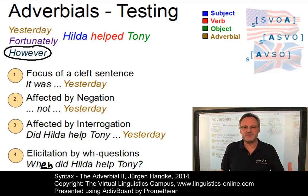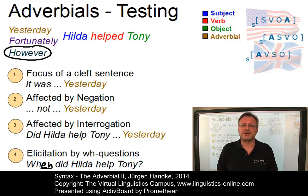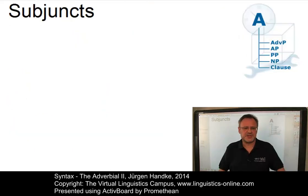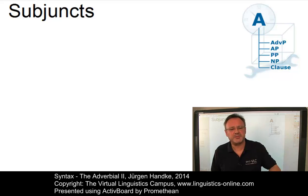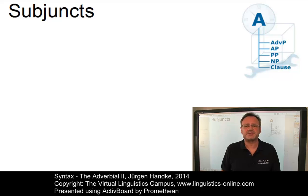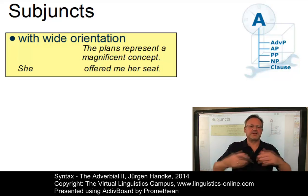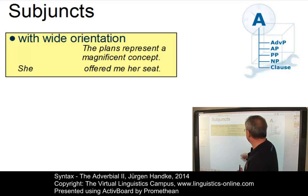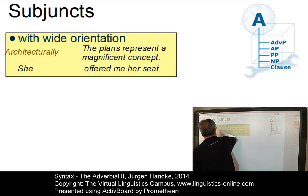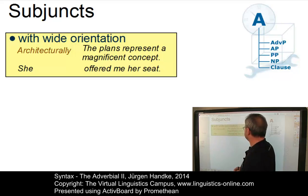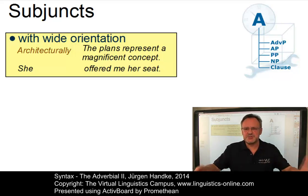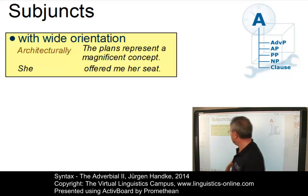Having defined the class of adjuncts, let's now look at the so-called subjuncts — a second class of adverbials integrated into clause structure. The term subjunct, added in the mid-1980s to the grammar of present-day English by Randolph Quirk and his colleagues, applies to adverbials which, unlike adjuncts, lack grammatical parity with other functional elements of clause structure. The first type is subjuncts with wide orientation, related to the sentence as a whole. For example: 'Architecturally, the plans represent a magnificent concept' — a viewpoint subjunct.